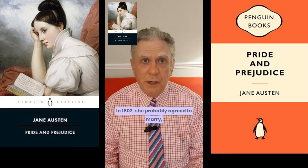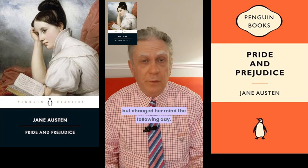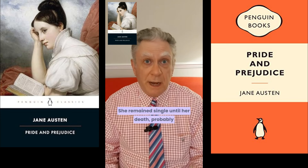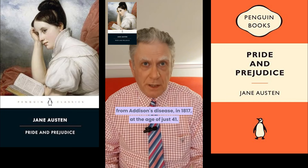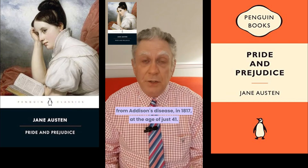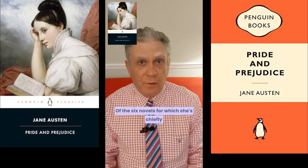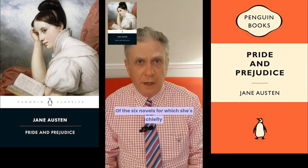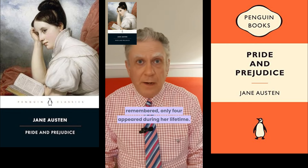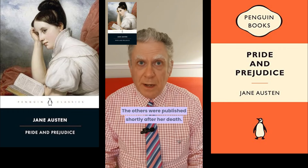In 1802 she probably agreed to marry but changed her mind the following day. She remained single until her death, probably from Addison's disease, in 1817 at the age of just 41. Of the six novels for which she's chiefly remembered, only four appeared during her lifetime. The others were published shortly after her death.